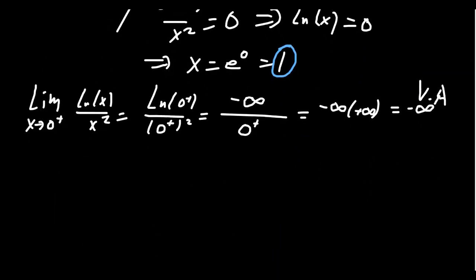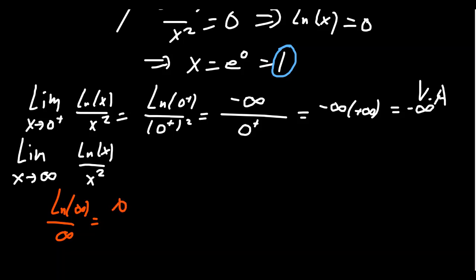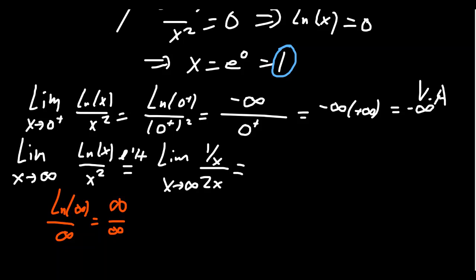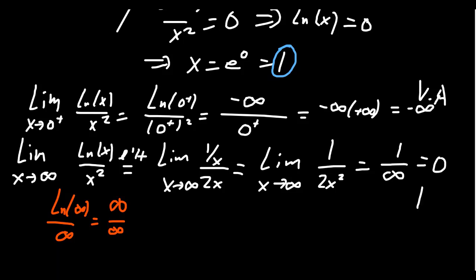We should also see what happens on the right-hand side. Taking the limit as x → ∞ of ln(x) / x²: plugging in infinity gives ln(∞) / ∞², which is the indeterminate form ∞/∞. To resolve this, we use L'Hôpital's rule: take the derivative of the top, which is 1/x, and the derivative of the bottom, which is 2x. Simplifying, we get 1 / (2x²) as x → ∞, which gives 1/∞ = 0. So the function has a horizontal asymptote at the x-axis.